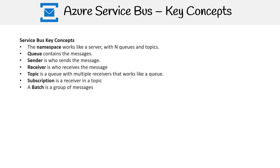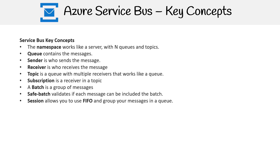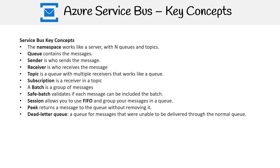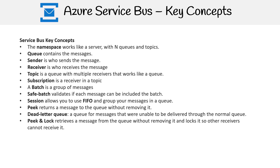A batch is a group of messages. Safe Batch validates if each message can be included in the batch. Session allows you to use FIFO and group your messages in a queue. Peek returns a message to the queue without removing it. Dead Letter Queue is a queue for messages that were unable to be delivered through the normal queue.